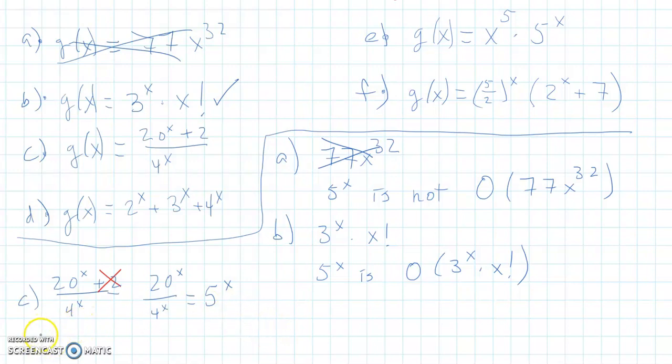And that tells us, because I can ignore that constant added on, and then I have this division here. Well, that means 5 to the x is big O of 20 to the x plus 2 divided by 4 to the x because this is going to grow as fast or faster than just 5 to the x.